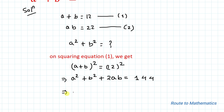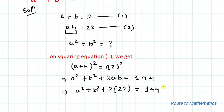Now we have a squared plus b squared plus 2ab equals 144. We can see that the value of ab is 22 from equation 2. Let's substitute that value here: 2 multiplied by 22 is 44, so a squared plus b squared plus 44 equals 144.